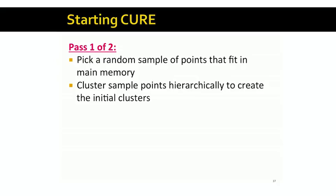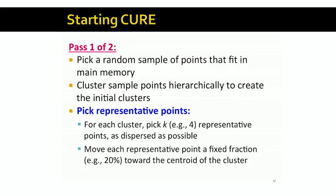Because hierarchical clustering is a flexible algorithm, it can actually find clusters of any nature without any restriction on the kind of clusters it can find. Once we've clustered the sample points and figured out the initial set of clusters, for each of those clusters, we're going to pick representative points to represent them. We're going to pick a number k — let's say four — and pick k representative points for each cluster. Our goal is to find representative points that are as far away from each other as possible, to get good coverage of the cluster.